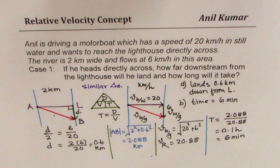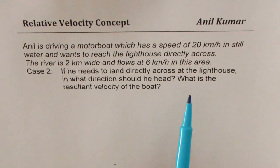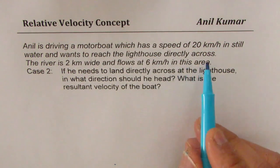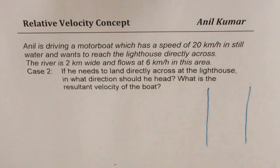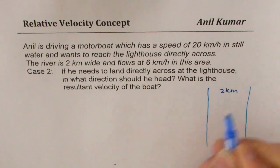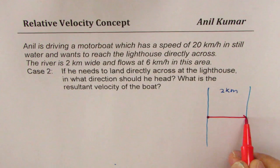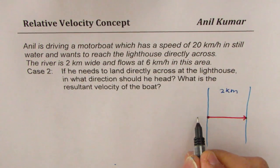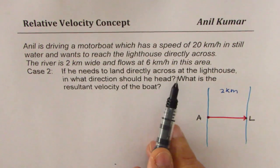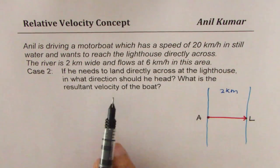We've solved case 1 without using trigonometry — just similar triangles and the Pythagorean theorem. Now let's look at case 2. The situation is exactly similar: Anil drives a motorboat at 20 km/h in still water and wants to reach the lighthouse directly across a 2 km wide river flowing at 6 km/h. This time, he needs to land directly across at the lighthouse. In what direction should he head?